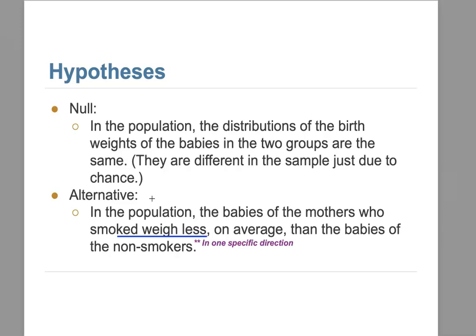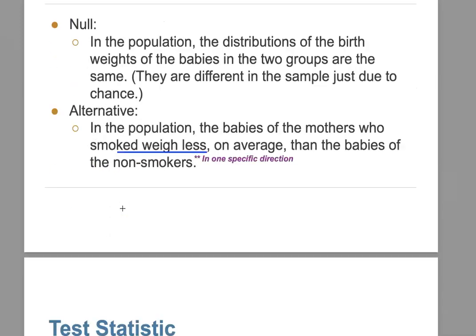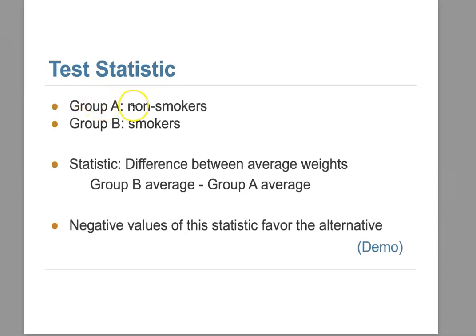After setting up the two viewpoints, we need to think about how to do the simulation and choose our test statistic. The alternative viewpoint says the average weight is lighter for smokers, so our test statistic is: Group B average (smokers) minus Group A average (non-smokers). Since we say Group B is lighter, the result will be negative. If we get a negative value for this statistic, we favor the alternative hypothesis.